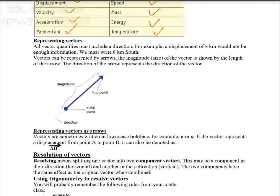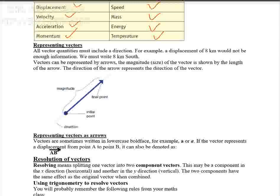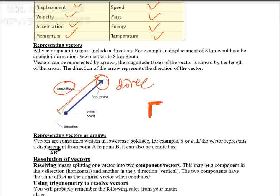We can represent vectors in different ways. The first way is representing a vector by an arrow. The head of the arrow indicates the magnitude and direction of the vector. The second way is bold lettering — for example, force is a vector and its symbol is capital F. If you write F in bold, that represents a vector.